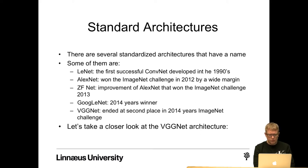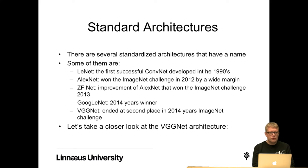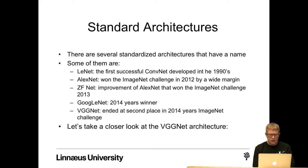There are several named standardized architectures used in the ImageNet challenge. Some of them are LeNet, the first successful ConvNet developed in the 1990s; AlexNet, which won the ImageNet challenge in 2012 by a wide margin — the first time a ConvNet was used in the ImageNet challenge; ZFNet, an improvement of AlexNet that won the following year; GoogLeNet, which won the 2014 challenge; and VGGNet, which ended at second place in the 2014 ImageNet challenge.